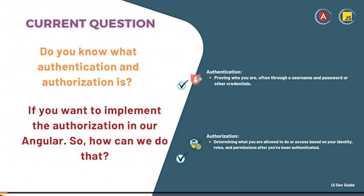Do you know what is the difference between authentication and authorization? Authentication is when we make the user login to identify if it is authentic — if the person is a real user of our website. Authorization is when the user is going to a URL or trying to access some data from our website, and whether they are allowed to do that. We can have multiple types of roles for the user, like admin or normal user.